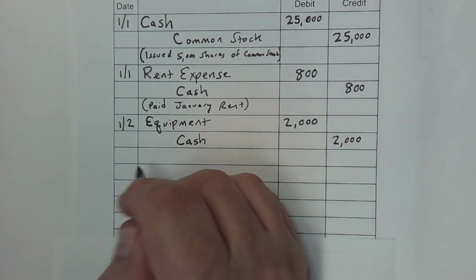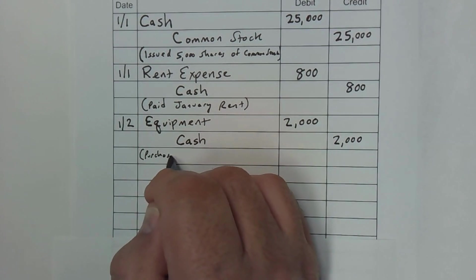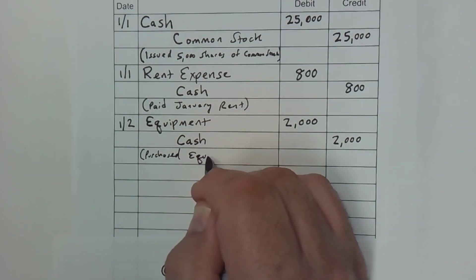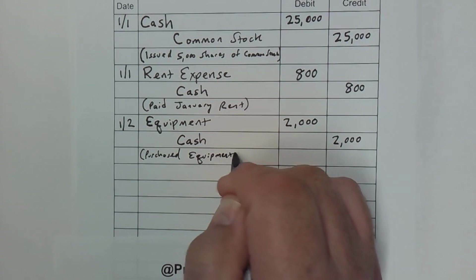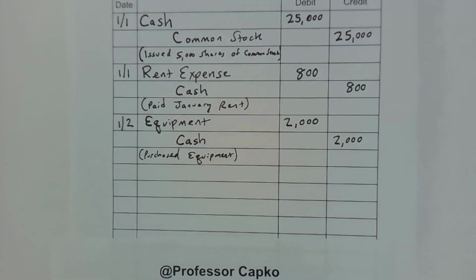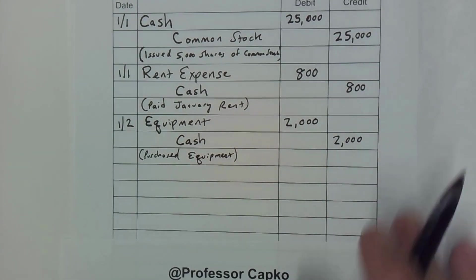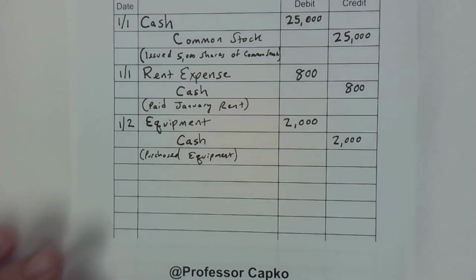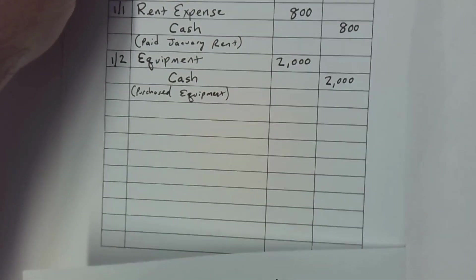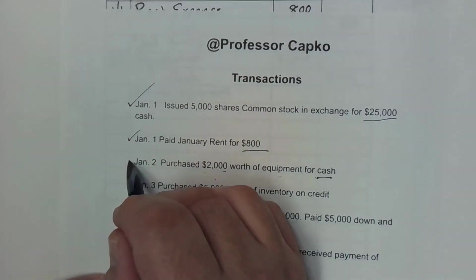I'm going to put a description — 'purchased equipment.' And again, if there was a reference number for the transaction, we'd add that in here. Go ahead and slide it up. And we can check off that transaction.